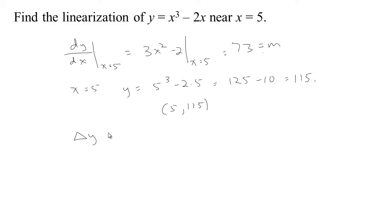Remember the change in Y is the slope times the change in X. That's exactly true if we're talking about the linear function, the line that approximates this graph. The change in Y would be how much does Y move away from 115. The slope is 73 and the change in X would be how far do we move away from the original X value, which is 5. So there's the equation of the line.